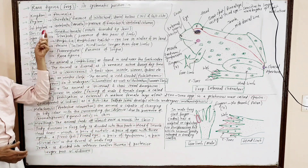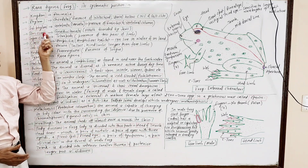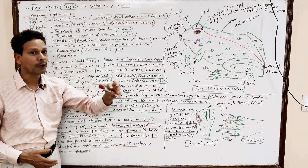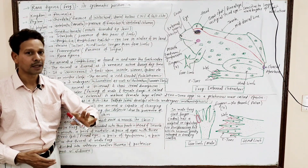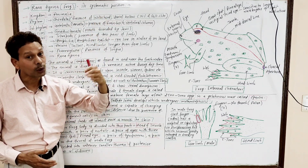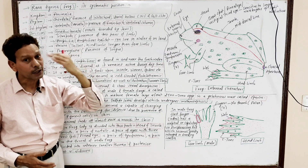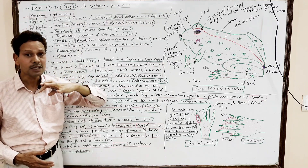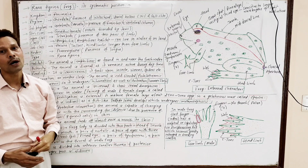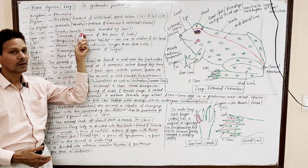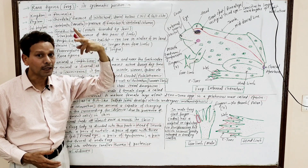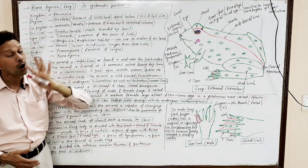Division: Gnathostomata, meaning mouth bounded by jaws. As we have already discussed, Cyclostomata has a circular mouth — the animal Petromyzon without jaws. But in this animal, the mouth is bounded by upper and lower jaws.